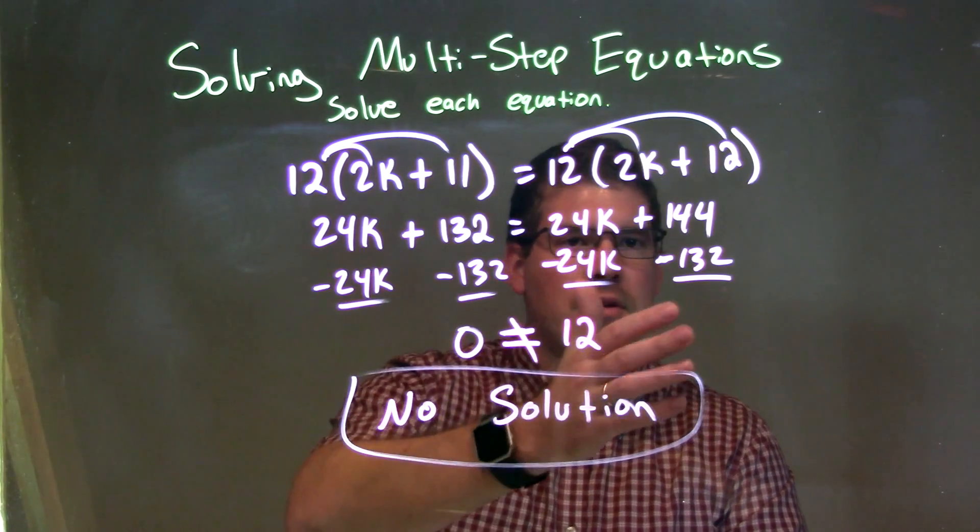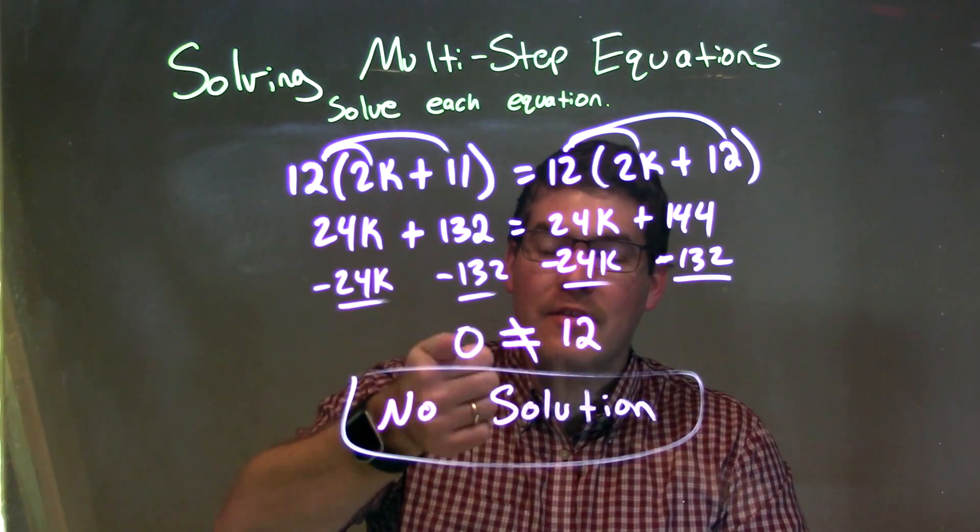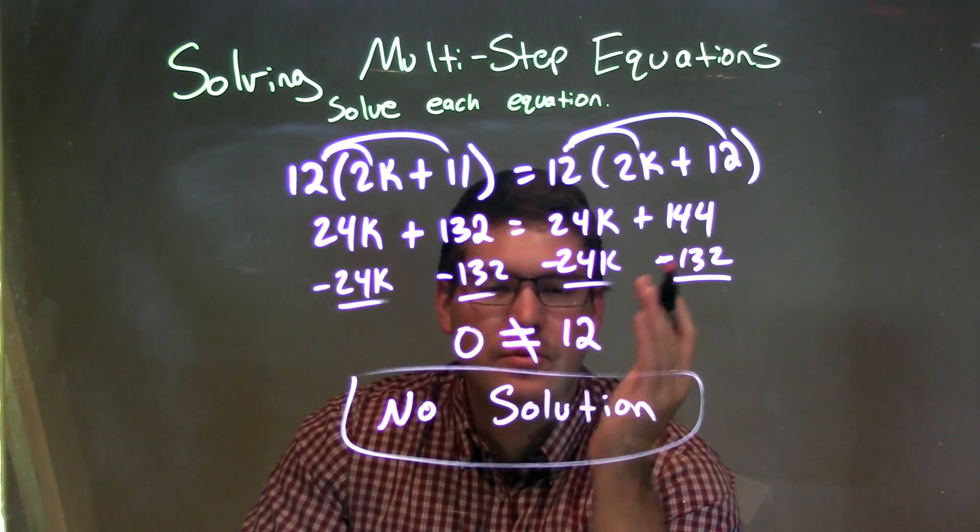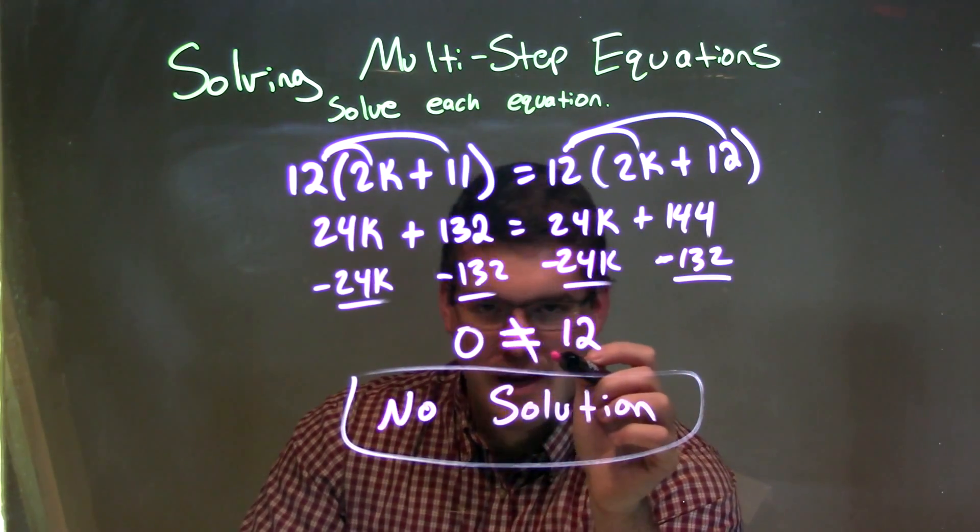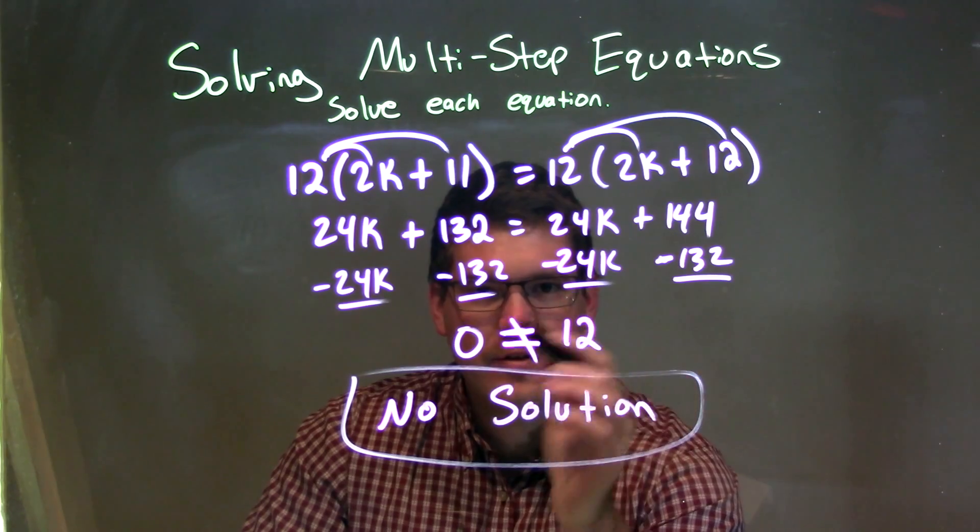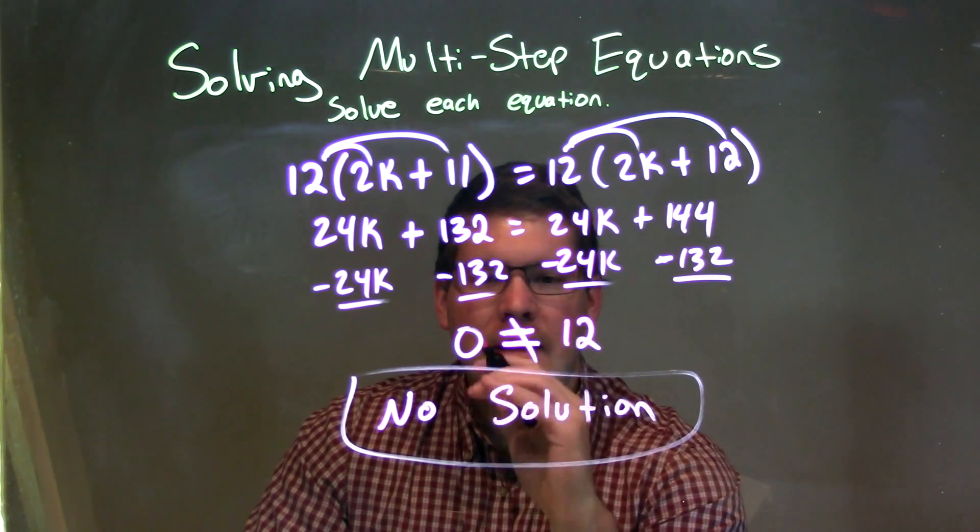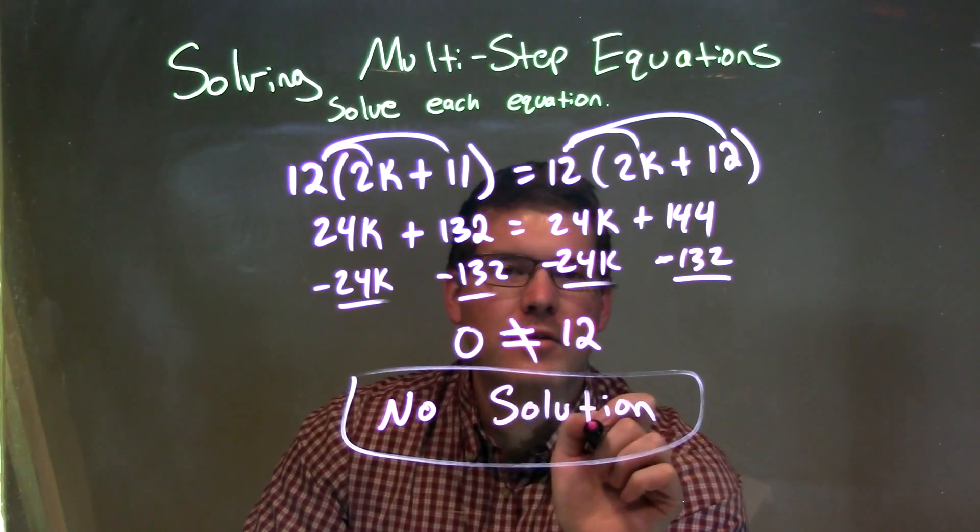I select my numbers to the right, and that ended up giving me 0 equals 12. That's not true. 0 cannot equal 12. So when that happens, if we have something that's not equal to another, something that's not a true statement, our final answer is just no solution. Thank you.